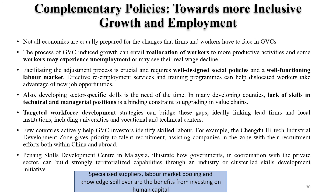Let us discuss the complementary policies which are essential for GVCs to develop. One of the most important things is employment and skill. If there is a focus on a specific kind of skill development, keeping in mind the particular sector's GVC — either a growing GVC or one which is planned — a large investment in those sectors actually helps specialized suppliers to grow. This is basically a kind of economies of scale, and there could be labour market pooling because a large number of skilled people are available.